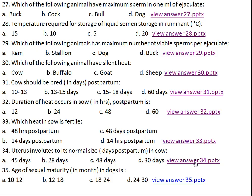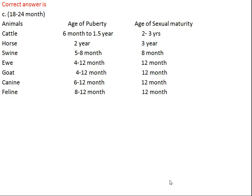Question number thirty-five: age of sexual maturity in dog is what? Option A: 10–12 months, Option B: 12–18 months, Option C: 18–24 months, Option D: 24–30 months. The age of puberty and age of sexual maturity are not the same. Age of puberty is when the animal shows first estrus signs or first ejaculate. Age of sexual maturity is when the animal is able to conceive and sustain pregnancy. For cattle: puberty 6 months to 1.5 years, sexual maturity 2–3 years. Horse: 2 years and 3 years. Swine: 5–8 months and 8 months. Canine: 6–12 months and 12 months. Feline: 8–12 months and 12 months.